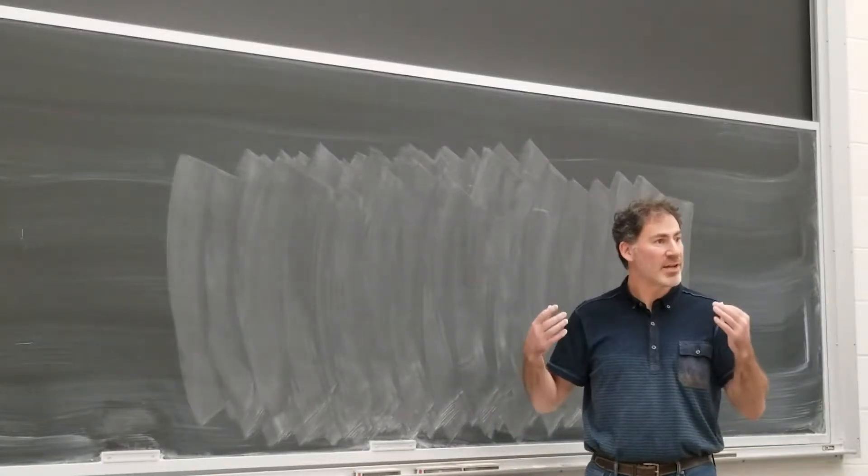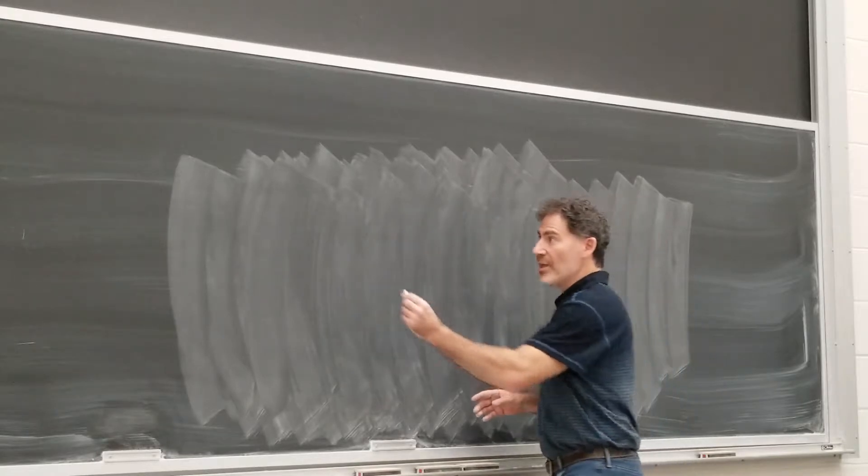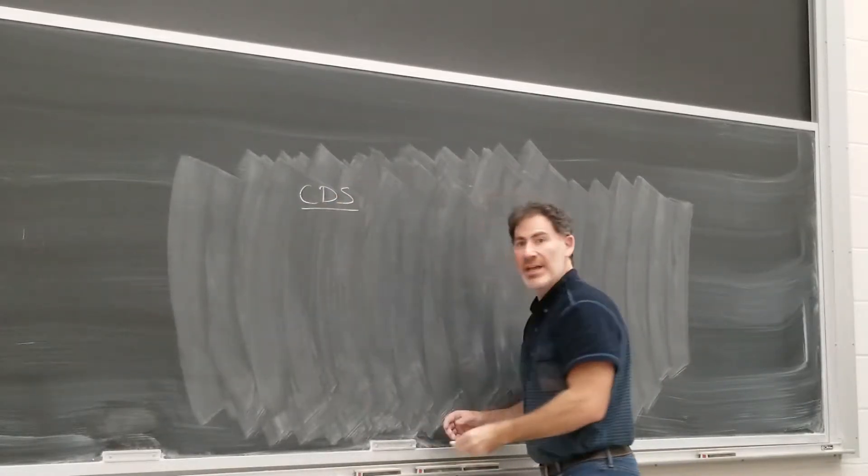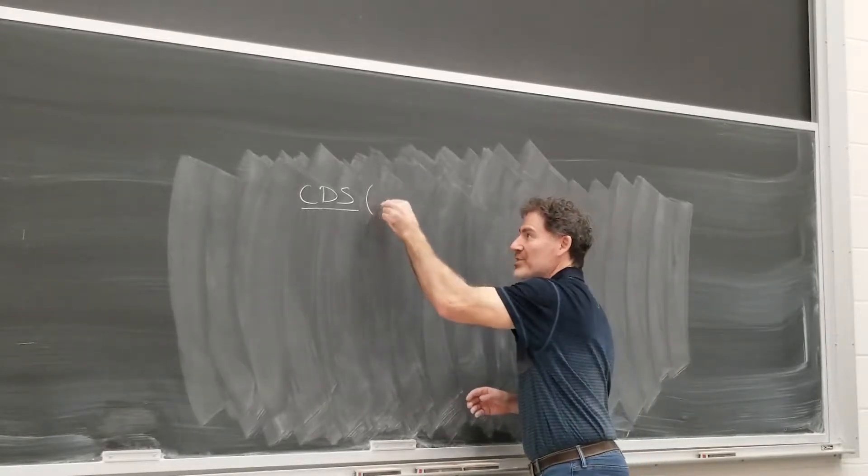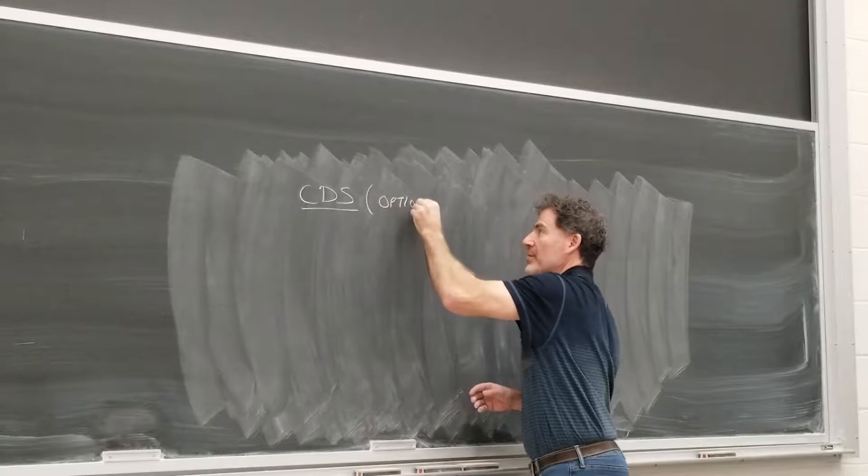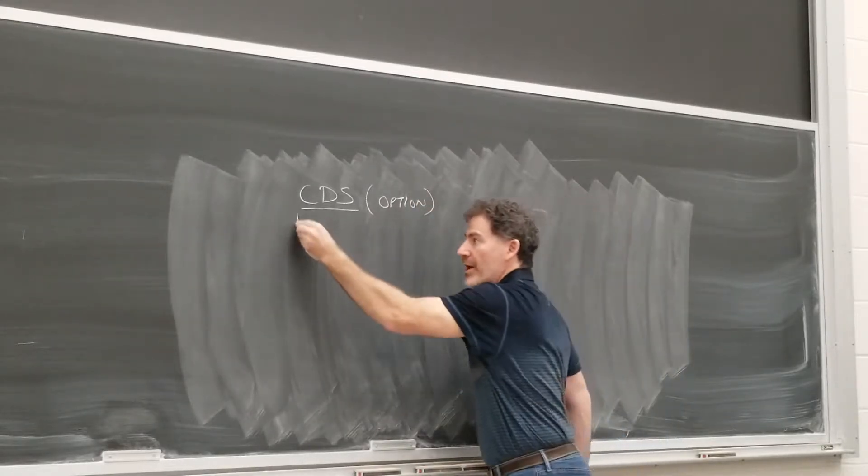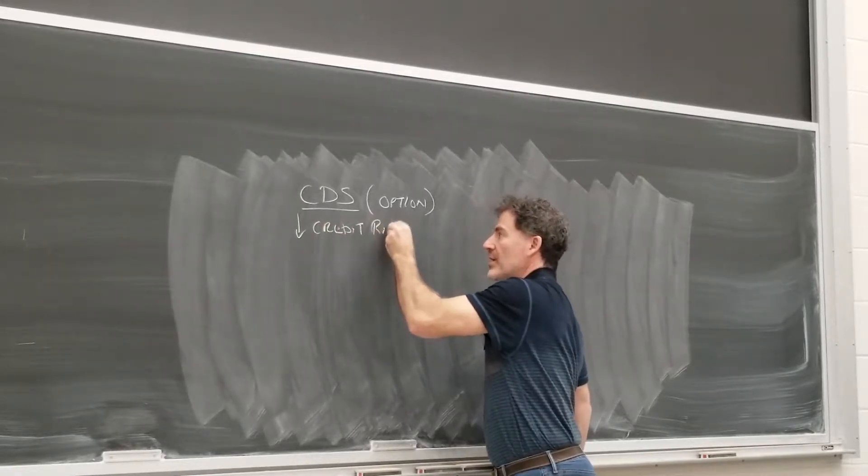So we were talking about derivative securities. This is actually in our fixed income section. They talk about credit default swaps. This is actually an option contract. So it's not a swap. It's an option. And it's a way of removing your credit risk exposure.